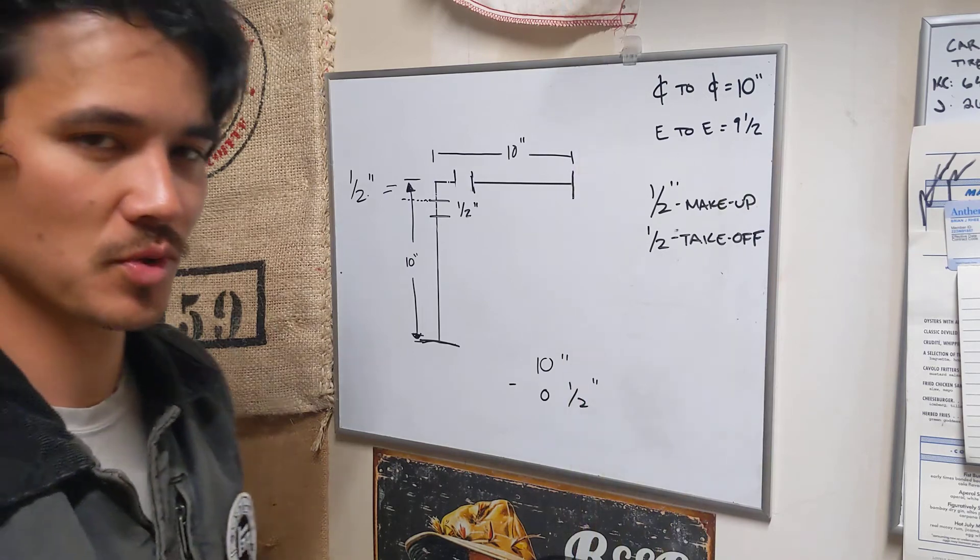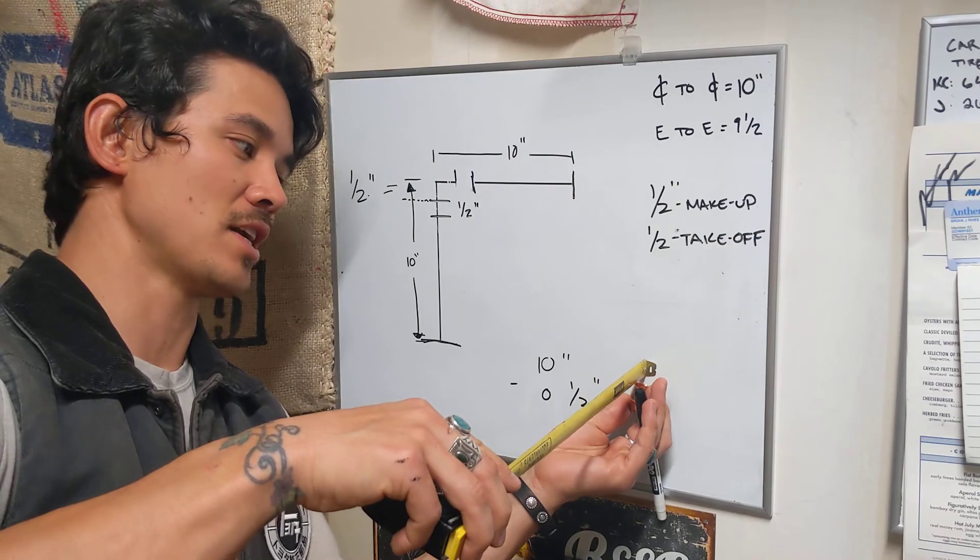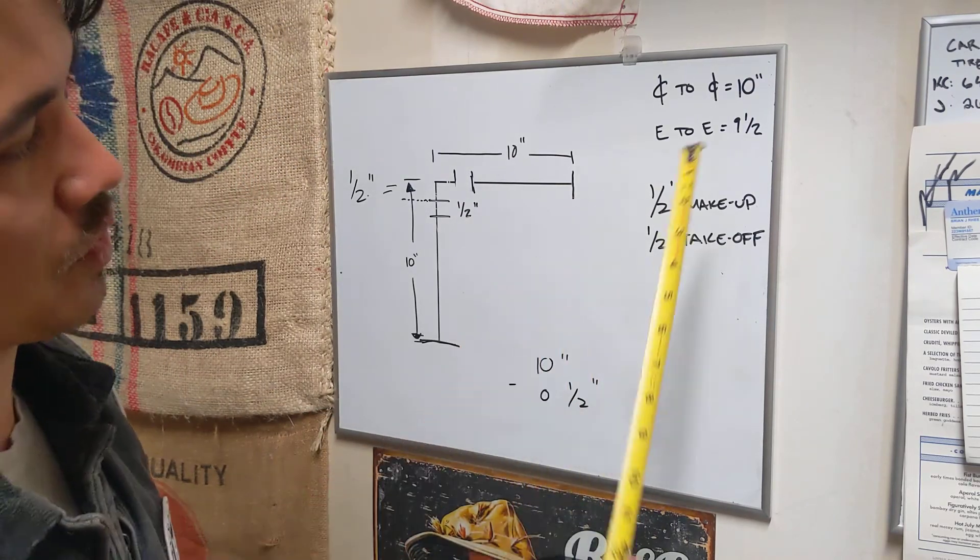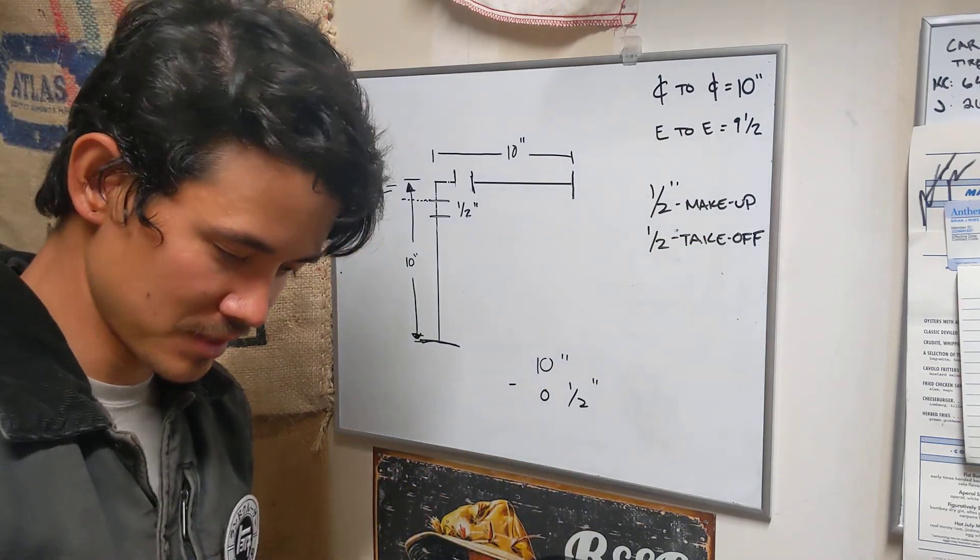The best way to do it mathematically is get your center to center, find out what your center is and then find out how much your makeup is and then once you can get that you can get an end to end measurement. Hope you guys are doing well, keep it up, stay tuned.